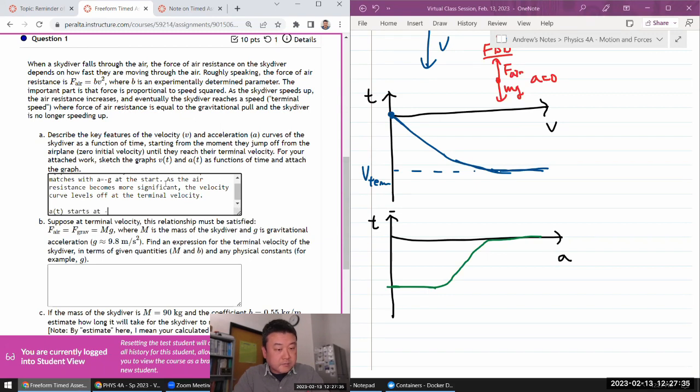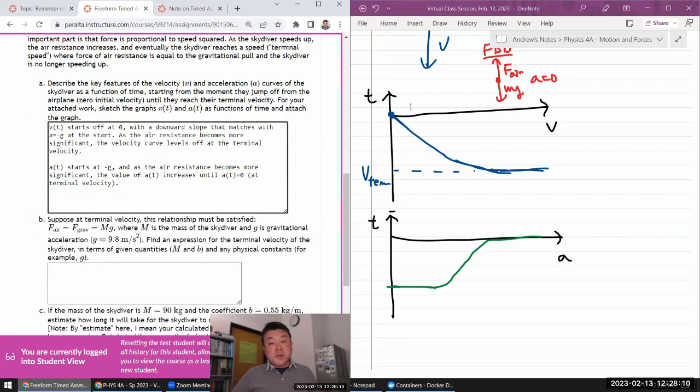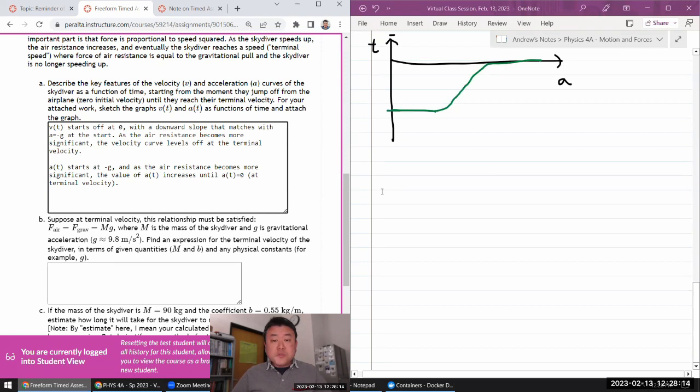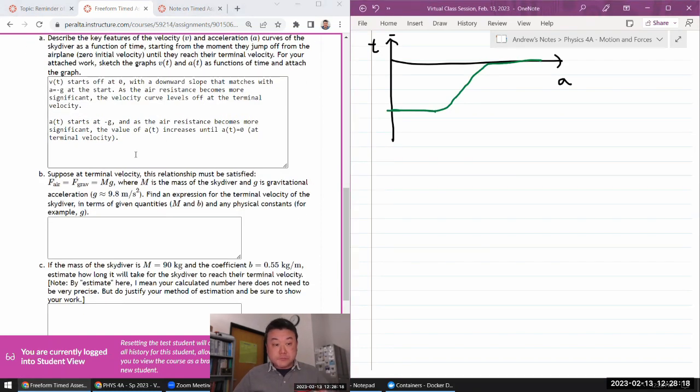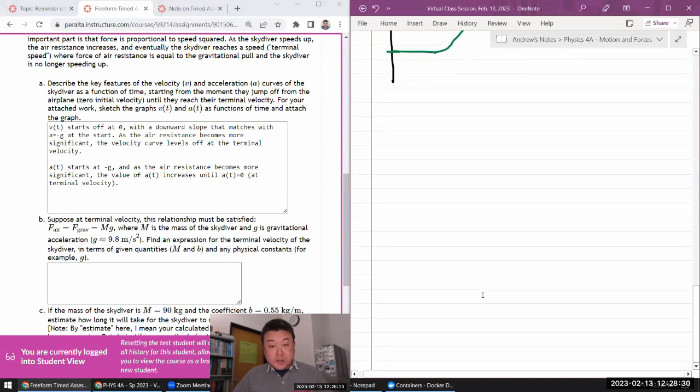So I'll describe velocity as a function of time starts off at zero with a downward slope that matches with the acceleration of minus g at the start. As the air resistance becomes more significant, the velocity curve levels off at the terminal velocity. Acceleration as a function of time starts at minus g, and as the air resistance becomes more significant, the value of a(t) increases until a(t) is equal to zero at terminal velocity, something like that. So really the intent to, purpose of this box is so that you can enter something within the 20 minute time limit. The figures, drawing, whatever, you have a little more time to attach work.